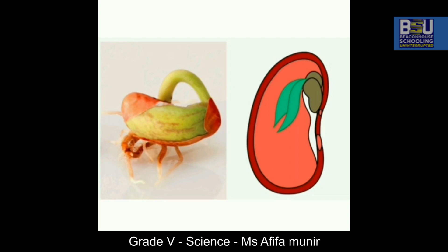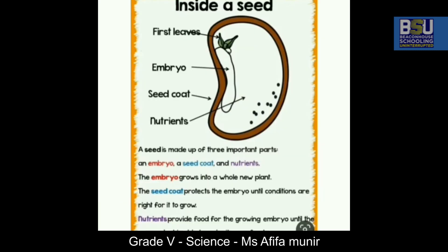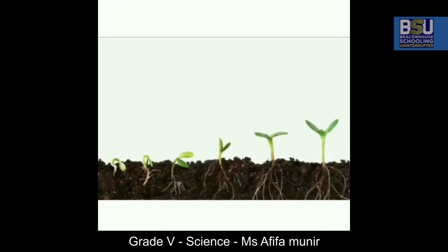First of all, it starts growing the roots. You can see in this diagram the first leaves are being shown. There is an embryo, the seed coat, the nutrients, and then when the conditions are perfect for the seed, it starts growing.